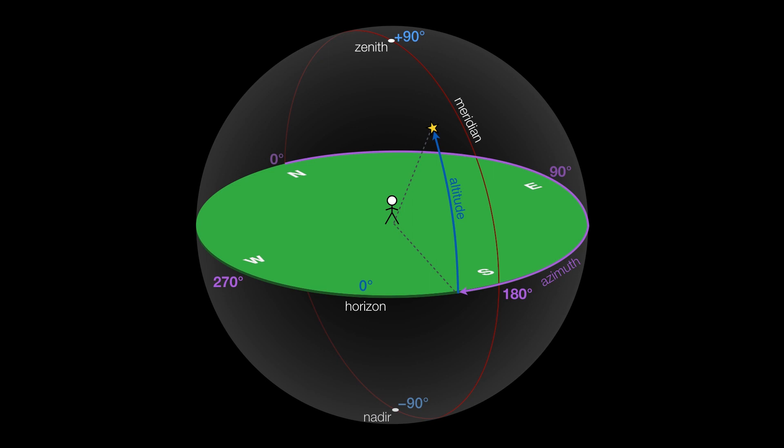So this system of measurement goes by a couple of names, but it's often referred to as horizon coordinates or sometimes the altitude azimuth system, or even simply Alt-Az, just for short.